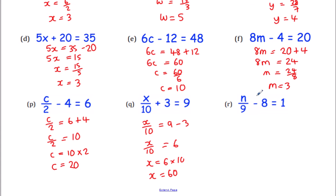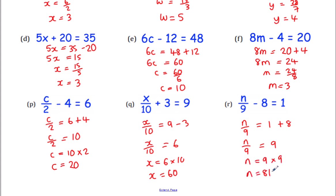And the last one: first add eight, so n/9 = 1 + 8, n/9 = 9. The opposite of dividing by nine is to multiply by nine: 9 × 9 = 81. So there you go — just a little introduction to one-step and two-step equations. Remember that the key is to always work backwards and always do the opposite operation: adding changes to taking away, dividing changes to multiplying, and so on.